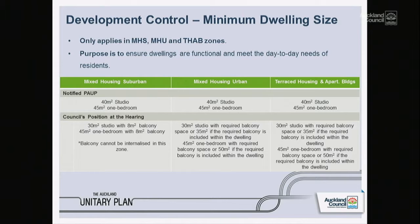But there is a minimum dwelling size — that's the internal dimension of a dwelling. In the notified plan, mixed housing suburban had 40 square metres for a studio and 45 for one bedroom. The council's position at the hearing was 30 square metres as long as there was an eight square metre balcony for a studio, or 45 square metres for one bedroom where there was an eight square metre balcony.